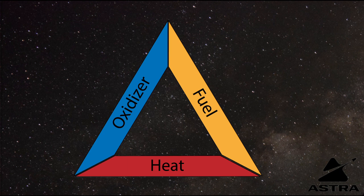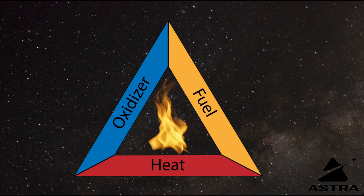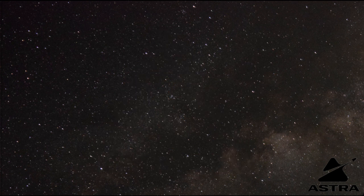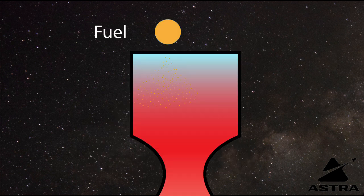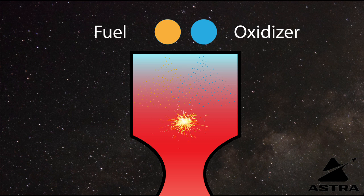In order for us to make a rocket work, we need to make sure that all three of those elements are present. Usually this means that we're going to put fuel and oxidizer into the combustion chamber and add heat in order to create the combustion reaction.